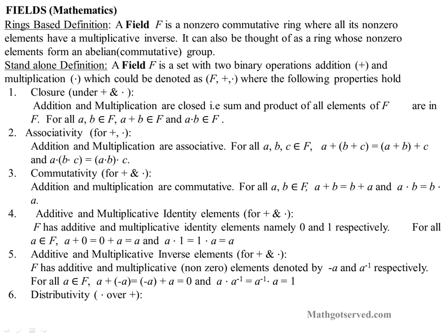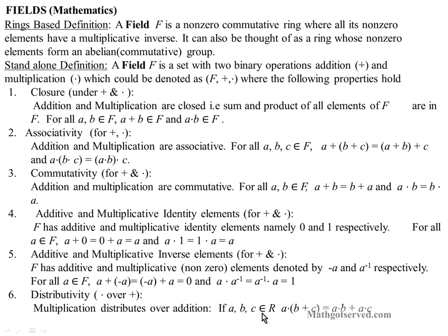Lastly, this is very similar to rings — distributivity. You can distribute multiplication over addition. For any three elements in our set F, which is a field, A times the sum of B plus C is equal to A times B plus A times C. We see the distribution of A over B and C. The distributivity of multiplication over addition must hold in order for a set to be a field.